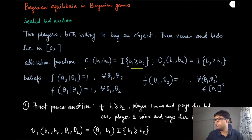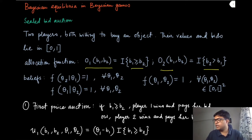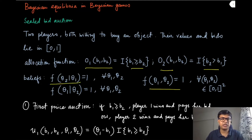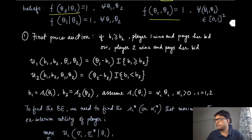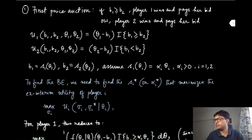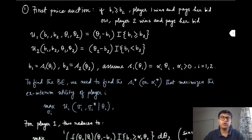If b2 is strictly greater than b1, then player two wins. The common prior is uniform, and types are assumed independent, so from player one's point of view, the distribution over theta two is also uniform. We now consider two different kinds of auctions, starting with the first price auction discussed in the previous example.